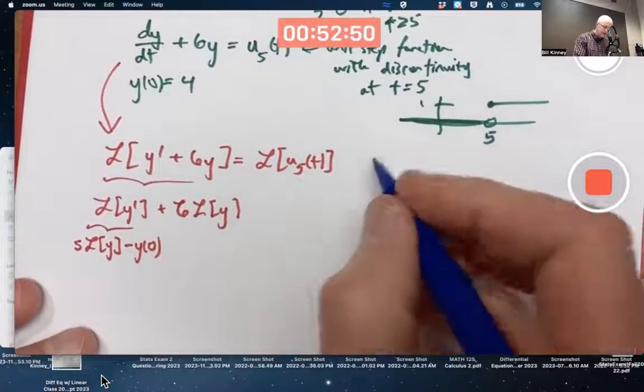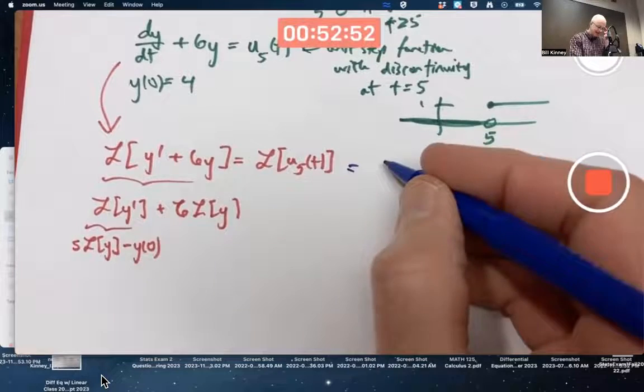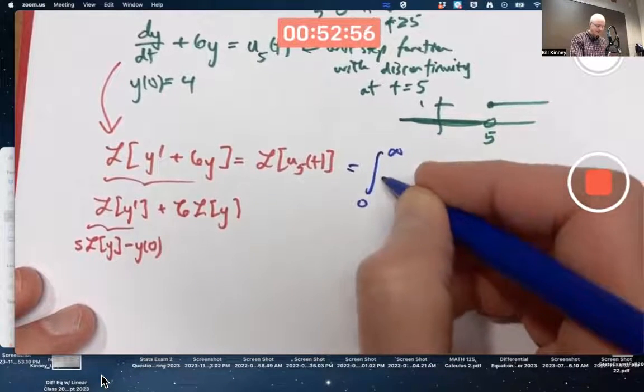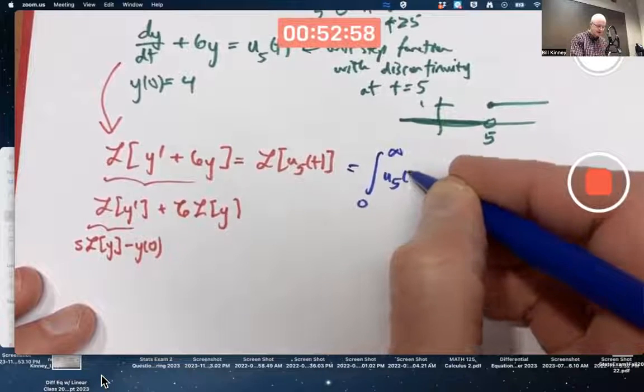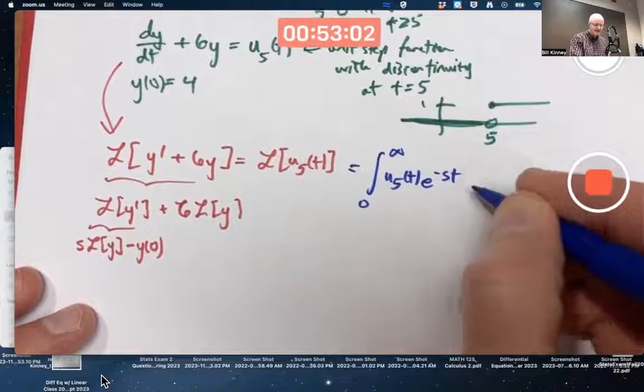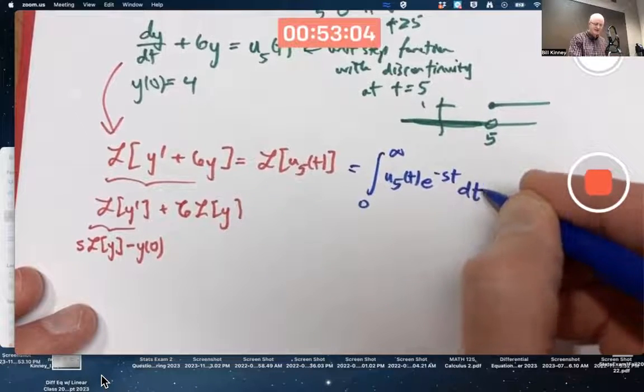What about the Laplace transform of this unit step function? I guess I've got to figure it out by doing an integral, right? This is the definition of the Laplace transform. I've got to put the u5 right there, and I guess e to the negative st right there, and integrate with respect to t.